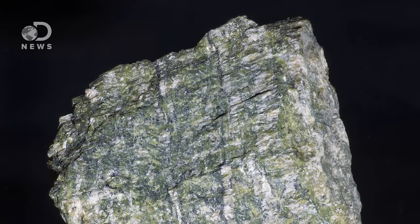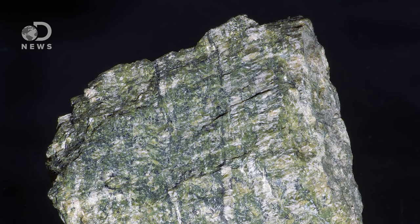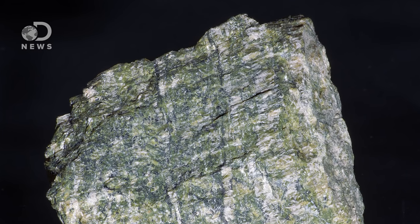Asbestos isn't a chemical or a human-made substance, it's stone. Actually, it's a group of six naturally occurring silicate minerals found in rock and soil in 900 different regions of the US alone.